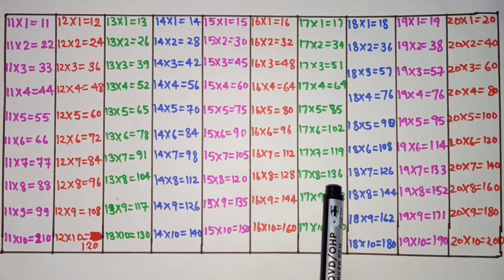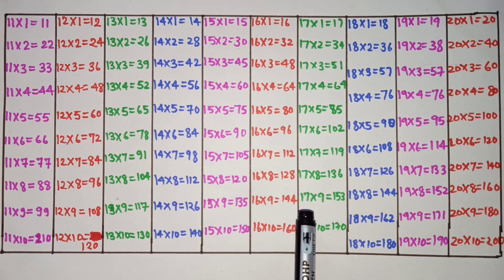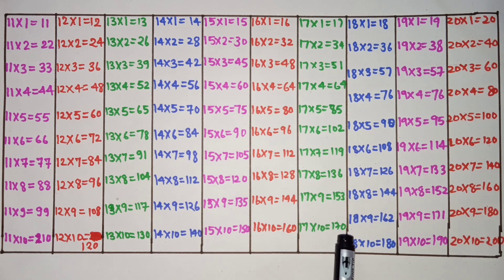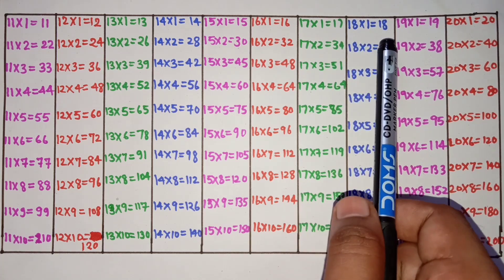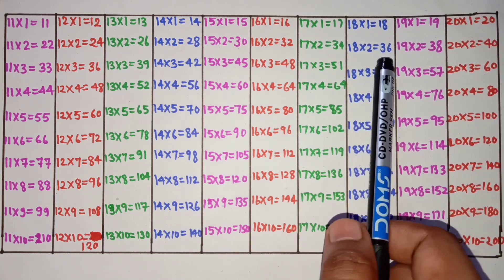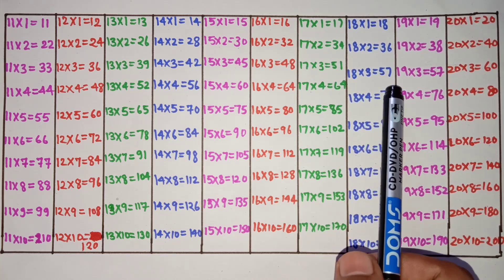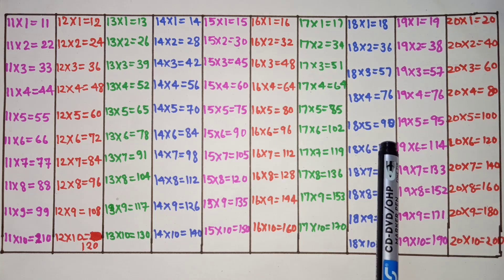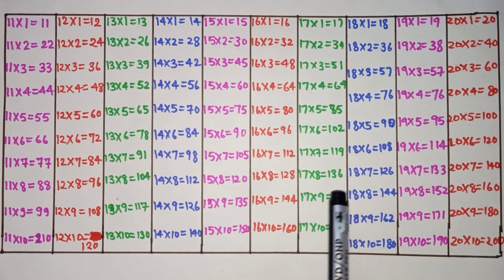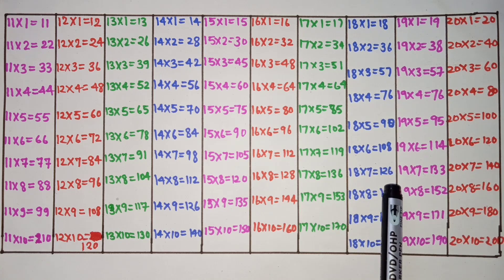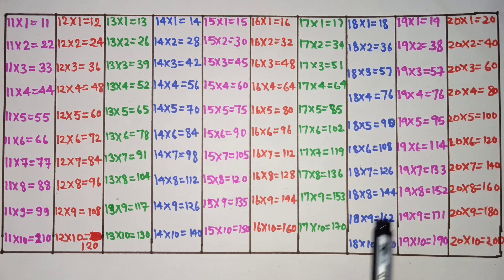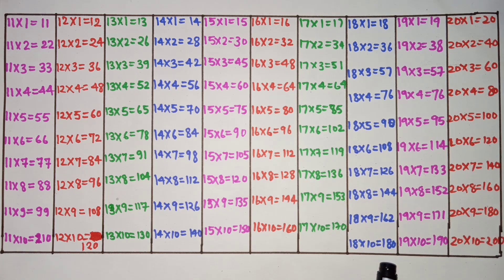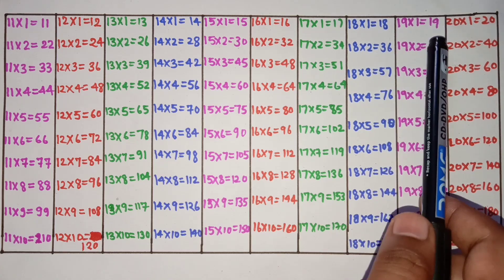17 eights are 136, 17 nines are 153, 17 tens are 170. 18 ones are 18, 18 threes are 57, 18 fours are 76, 18 fives are 90, 18 sixes are 108, 18 sevens are 126, 18 eights are 144, 18 nines are 162, 18 tens are 180.